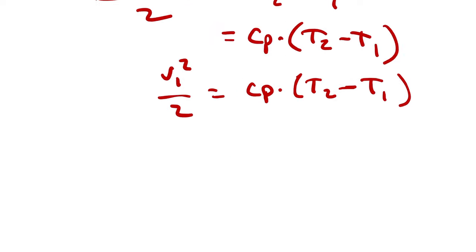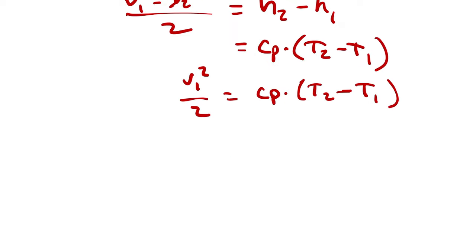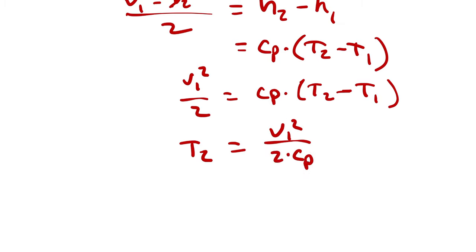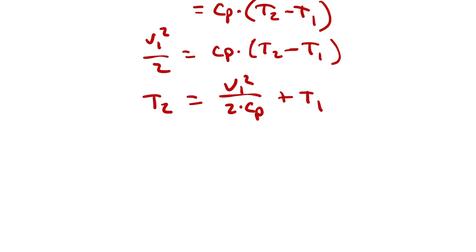Now we can solve for T2: T2 = V1²/(2·Cp) + T1. We have V1 = 320 m/s, Cp = 1.005 kJ/(kg·K), and T1 = 241.15 K. Why don't you try calculating T2 on your own?